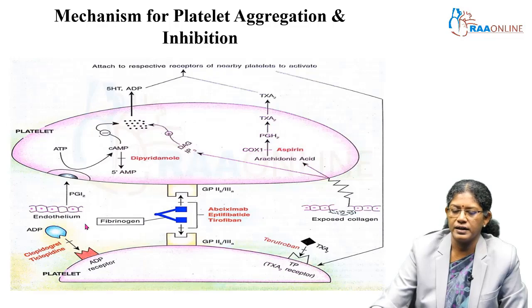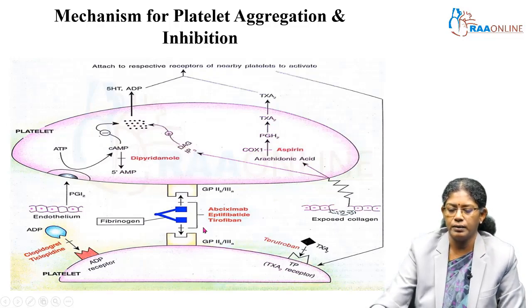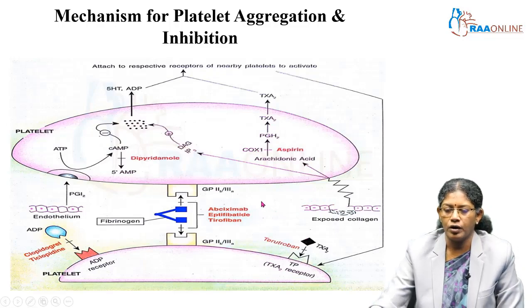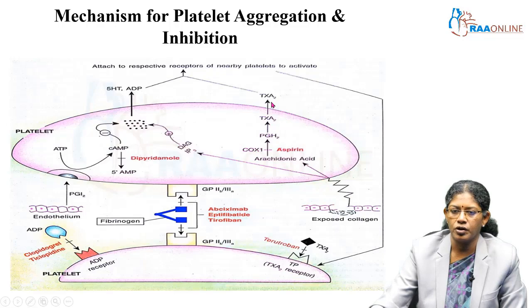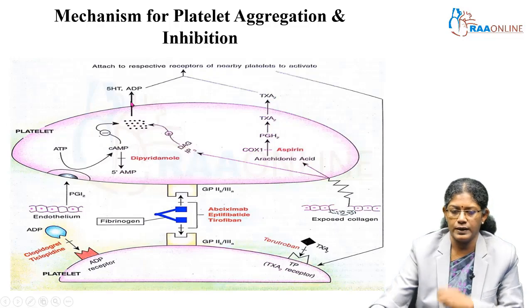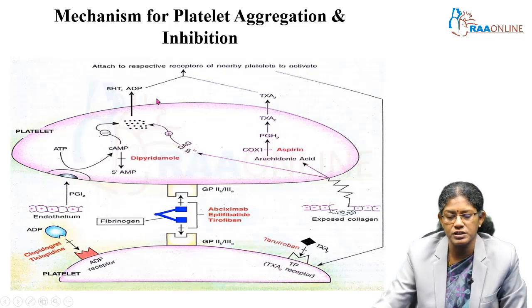Regarding the mechanism of platelet aggregation: platelets adhere and come together to form a clot or thrombus. Thromboxane A2 is a substance important for platelet aggregation; aspirin, an NSAID, inhibits the enzyme cyclooxygenase, thereby inhibiting the production of thromboxane A2. Both thromboxane A2 and ADP attract nearby platelets and produce platelet aggregation.